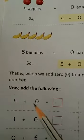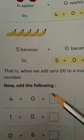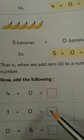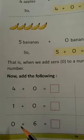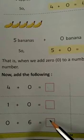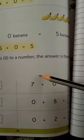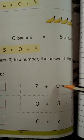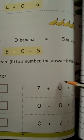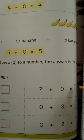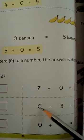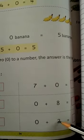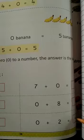0 ke saath hum kisi bhi number ko agar plus karthay hai, tho humara answer same aega. Aise 1 ke saath hum 0 ko plus karenge, tho humara answer 1 aega. 0 ke saath hum 6 ko plus karenge, tho humara answer 6 aega. Thik hai? Aise hi 7 ke saath agar hum 0 ko plus karthay hai, tho humara answer 7 aega. Kiyonki 0 me koi bhi hume line draw nahi karna hi. Koi picture nahi bani hooti hai. Isi liye same number aata hai. 0 plus 8 equal to 8. 0 plus 2 equal to 2. Ok kids?